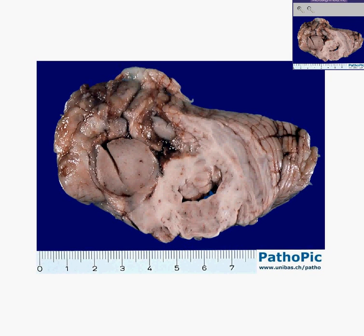Here is another brain tumor. We're getting pretty good at picking these out quickly because they look so much different from the normal brain. Notice this is a cerebellum because you have these small, linear folia, rather than the larger, more irregular gyri and sulci which you see in the cerebrum.